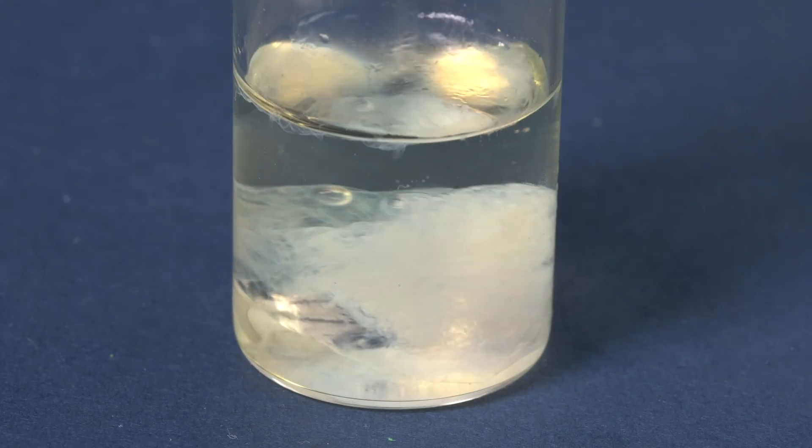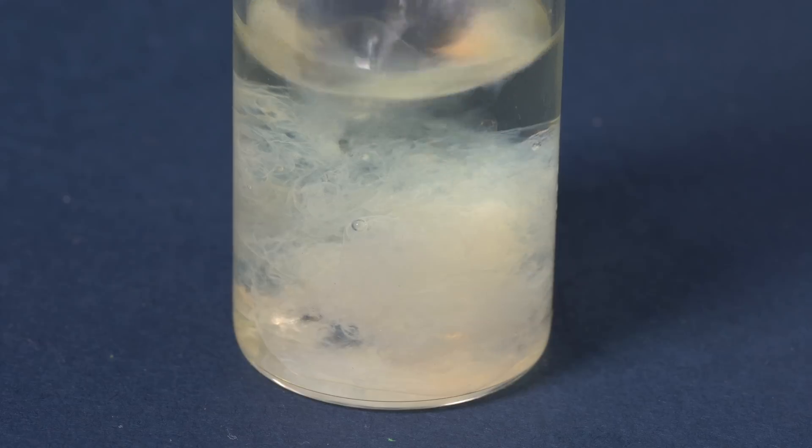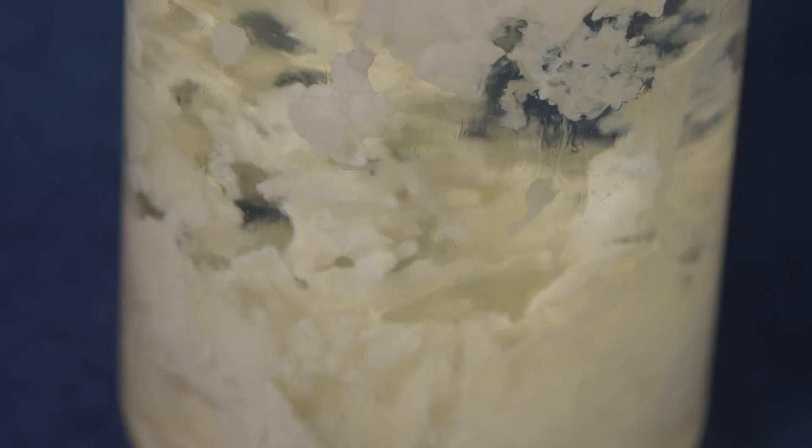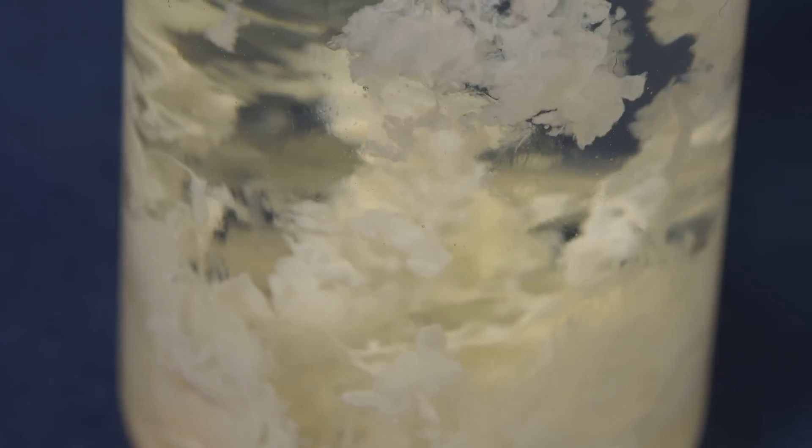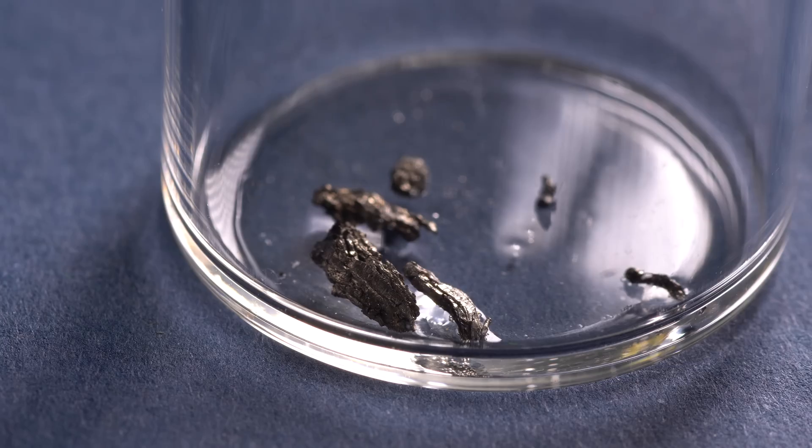When alkali is added to the solution of samarium chloride, the white samarium hydroxide precipitates, which then can be dissolved in Trilon B, the descaling agent for the catalyst.